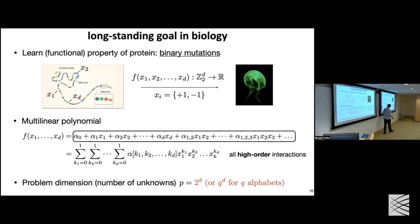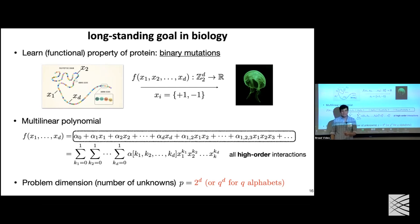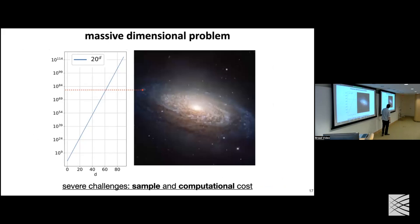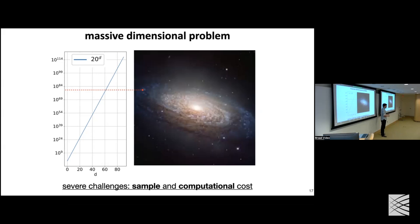For amino acids, where the alphabet size q equals 20, this becomes 20^d. For a moderate-sized protein of length 60, the dimension of the problem becomes something like 10^84 — as large as the number of atoms in the universe. There's no way we have that many protein measurements. It is a statistically hard problem: we cannot perform that many experiments or create assays that large.